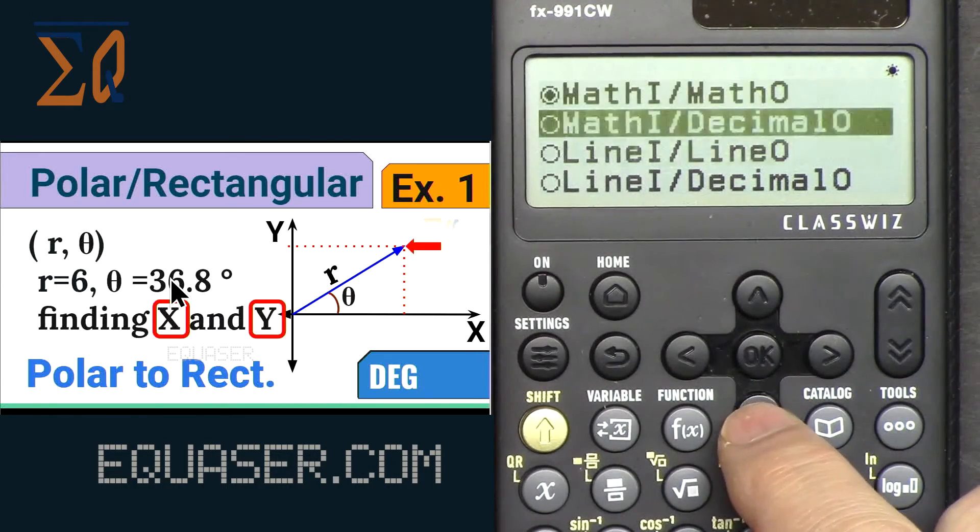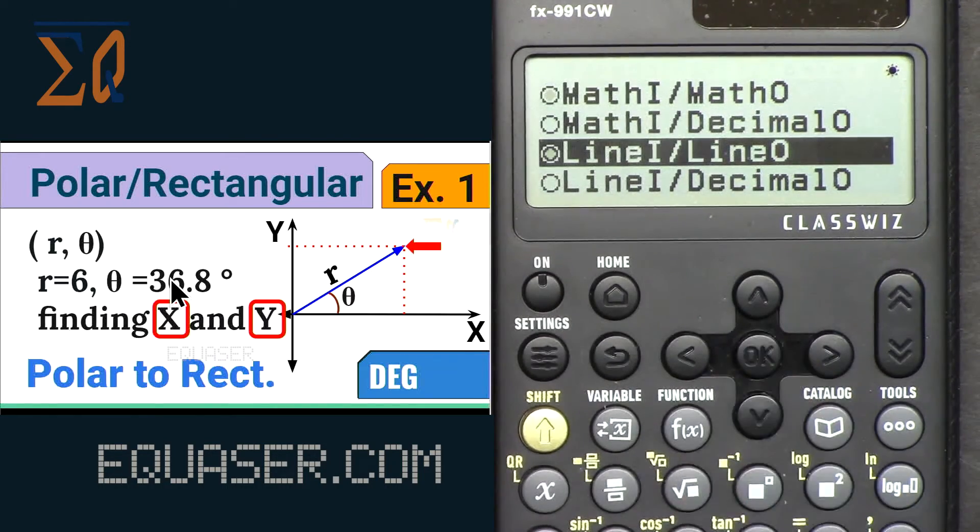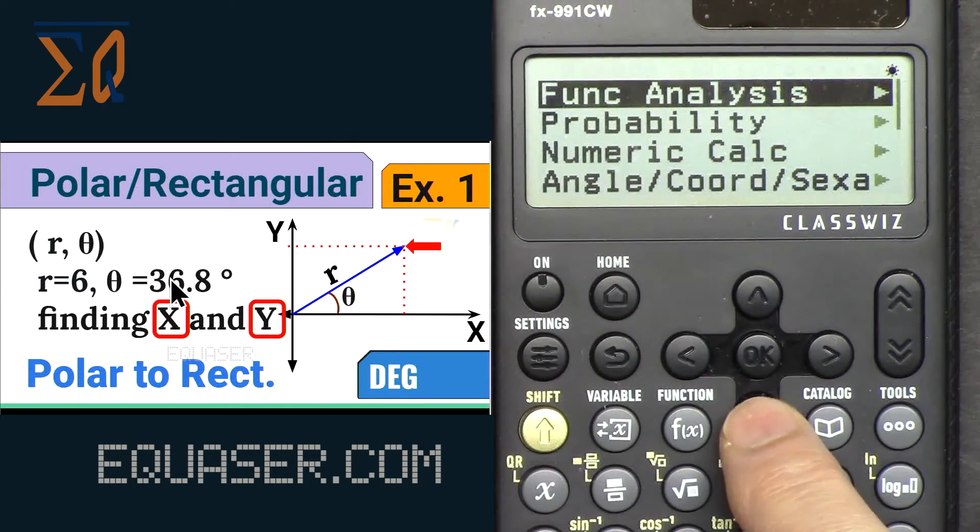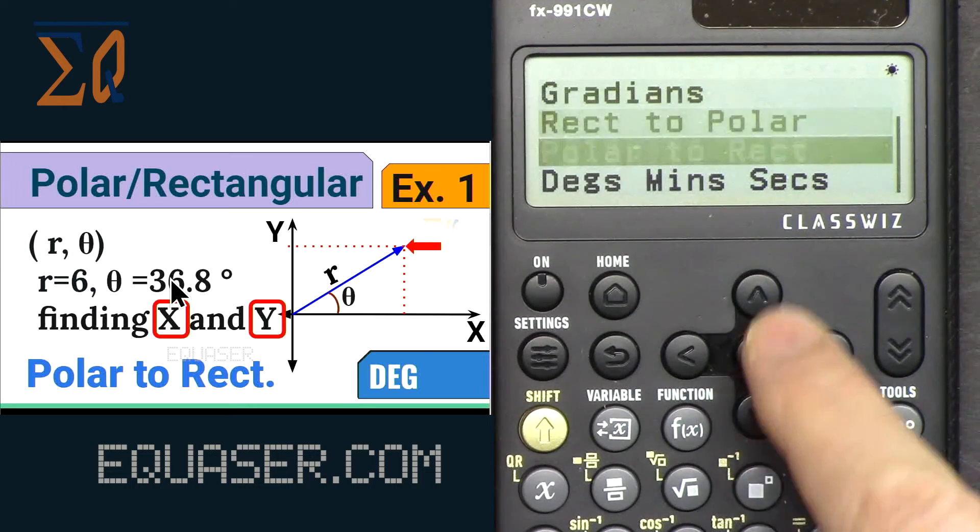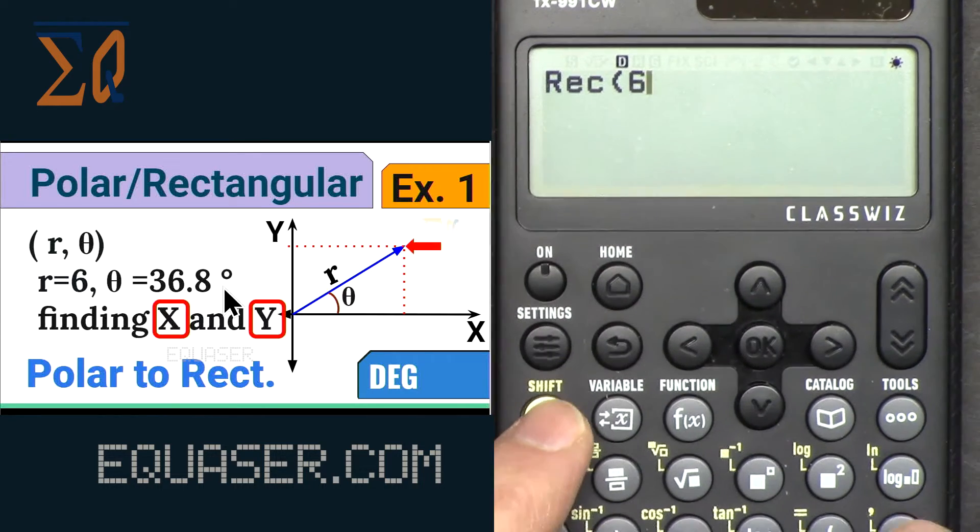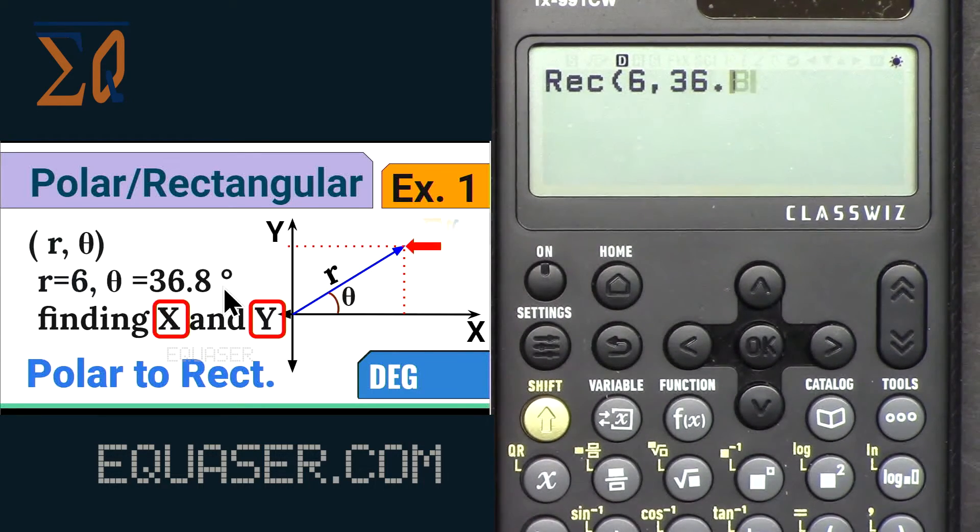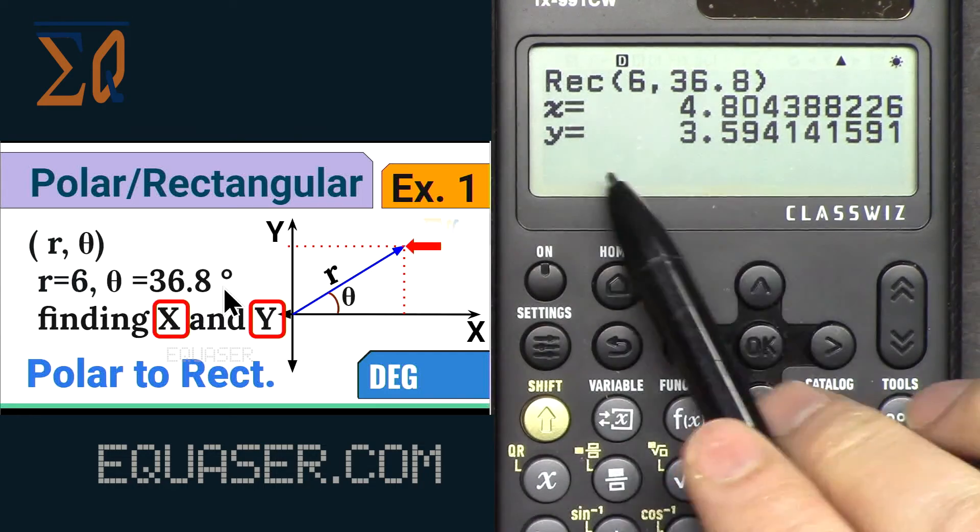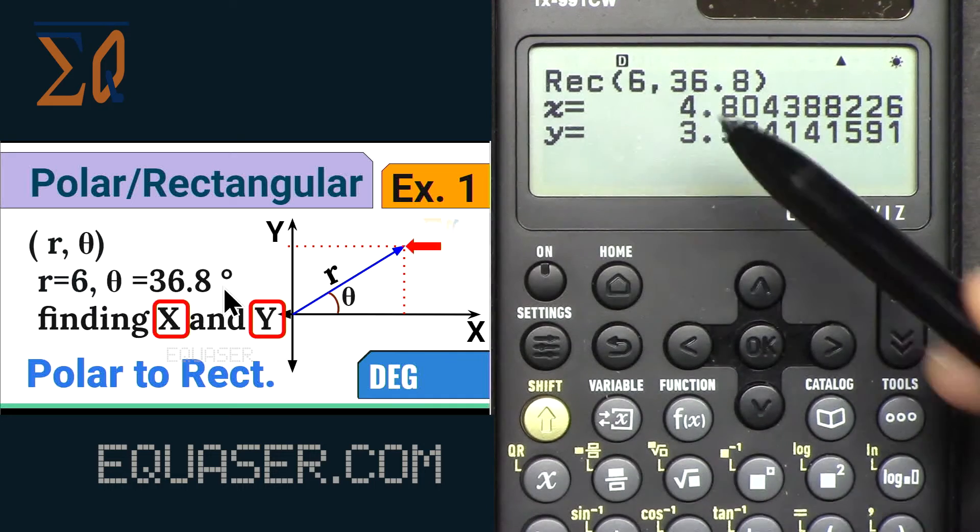If I change it, press Settings, Calculator Setting, Input/Output, go to Line In/Line Out, and then All Clear. Now if I go to Catalog and then Polar to Rectangular, let's enter 6 and 36.8. 6, Alpha, comma, 36.8, close it. If I press Equal, now we see X and Y in the same line which is better. We're in Line mode.